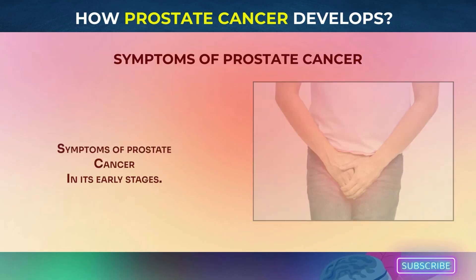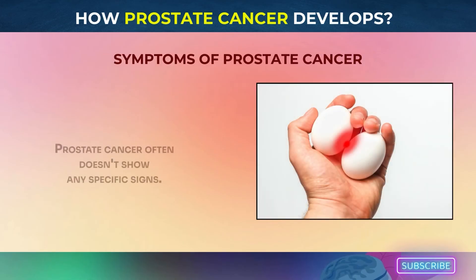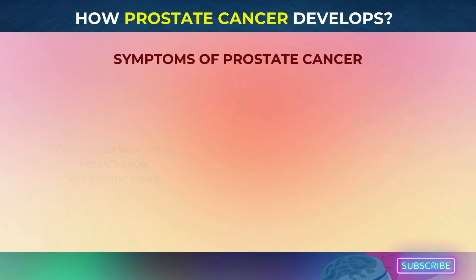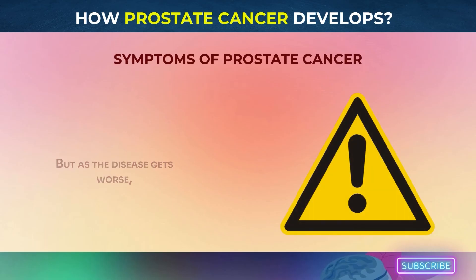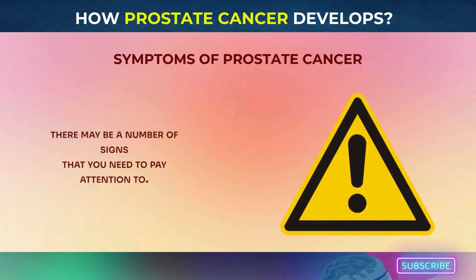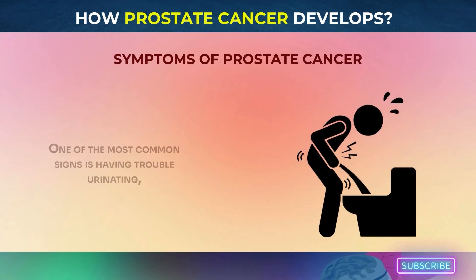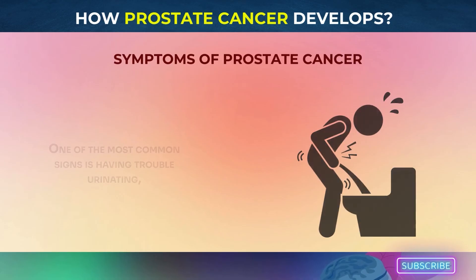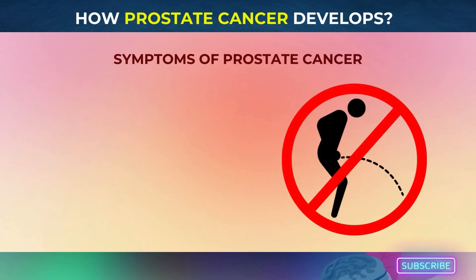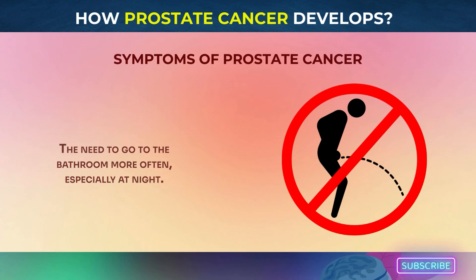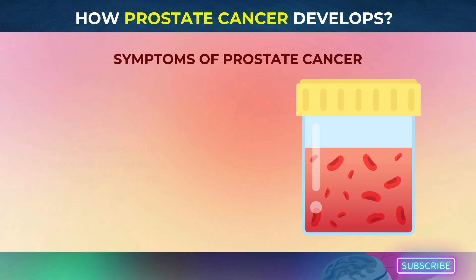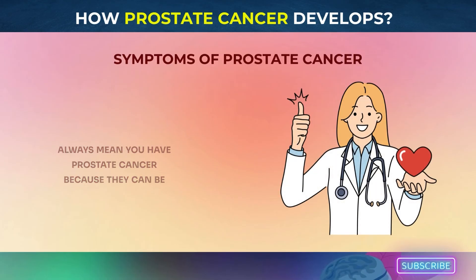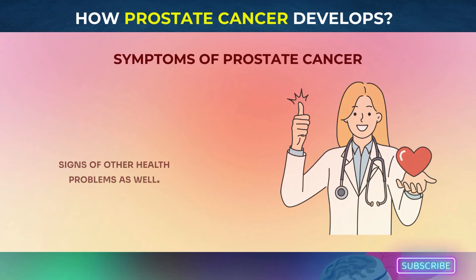Symptoms of prostate cancer: in its early stages, prostate cancer often doesn't show any specific signs, which is why regular screenings are so important. But as the disease gets worse, there may be a number of signs to pay attention to. One of the most common is having trouble urinating, which can show up as a weak or delayed urine flow or the need to go to the bathroom more often, especially at night. Other important signs are having blood in your urine or sperm and having pain in your pelvis. These signs don't always mean you have prostate cancer, as they can be signs of other health problems as well.